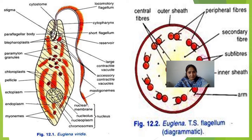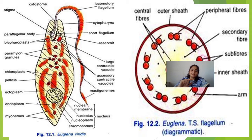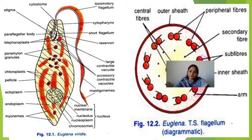The flagellum originates from the blepharoplast. There is a paraflagellar body and a stigma. Both the paraflagellar body and stigma are photosensitive organs, which are responsible for detecting light.